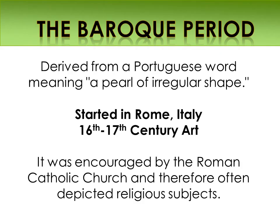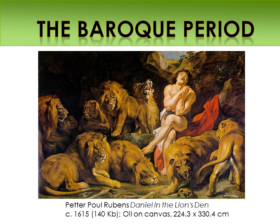In the 17th century, the Baroque period derived from the Portuguese word meaning a pearl of irregular shape. This started in Rome, Italy. It was encouraged by the Roman Catholic Church, which was therefore often depicting religious subjects in their churches. This was a big change from the past, where art was considered demonic and pagan. Here's one of the religious paintings, Daniel and the Lion's Den by Rubens — the kind of paintings you might find in churches.